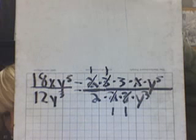There's one 2 on top and one 2 on bottom, so you cross those off and make them 1s. There's one 3 on top and one 3 on bottom, so you cross those off and make them 1s too.